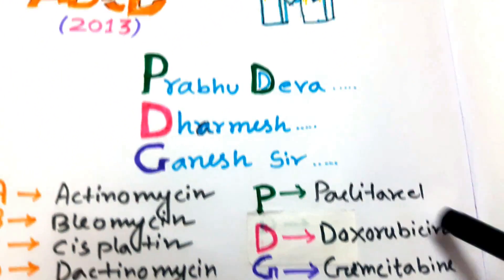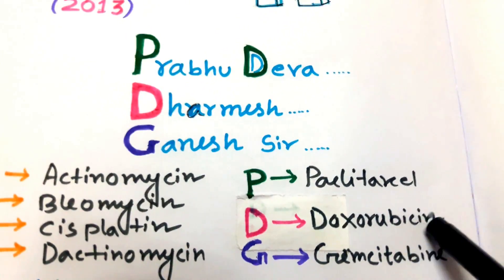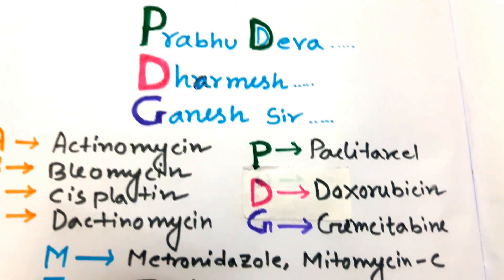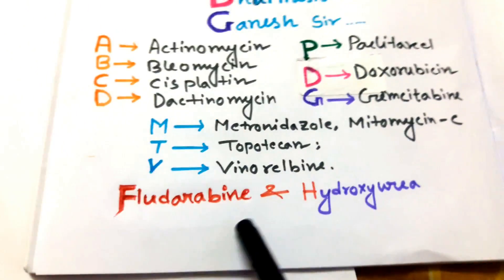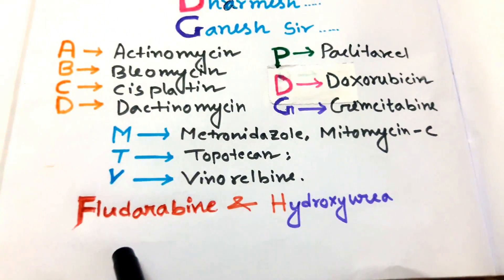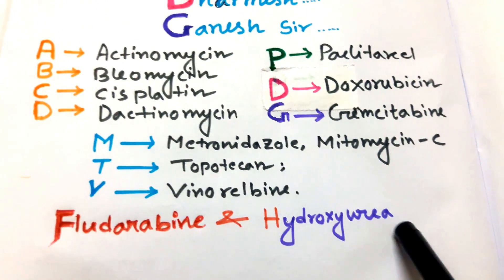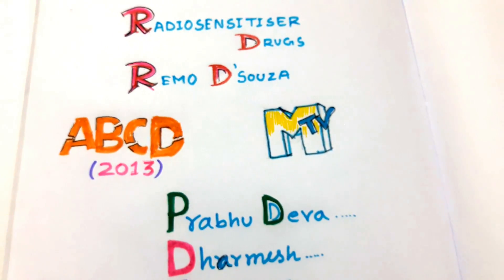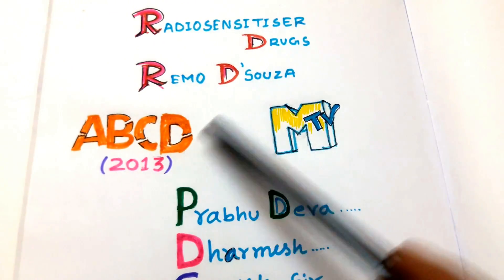For the star cast: Prabhudeva — P for paclitaxel, D for doxorubicin, and G for gemcitabine. There are two other commonly used drugs in this category: fludarabine and hydroxyurea. Our mnemonic is now complete.